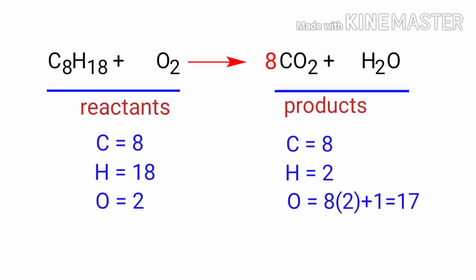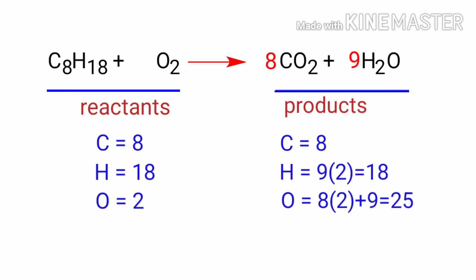Now we need to balance the hydrogen atoms. To do this, we need to put a coefficient of 9 in front of H2O. The hydrogen atoms are balanced.